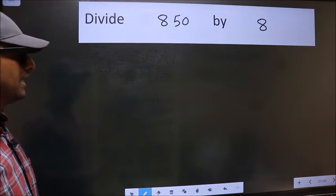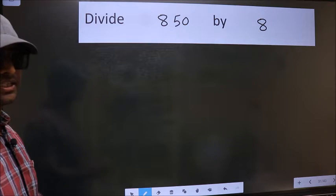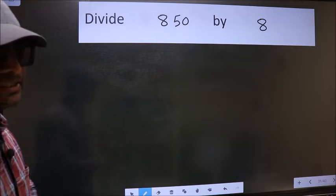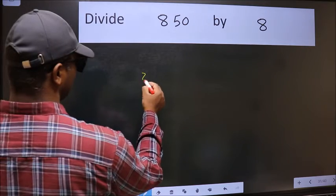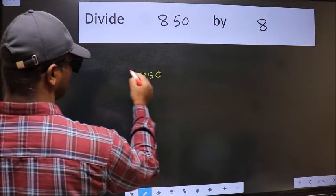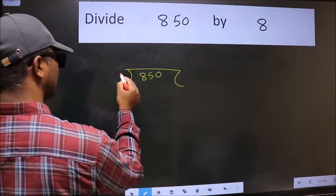Divide 850 by 8. To do this division, we should frame it in this way: 850 here and 8 here.